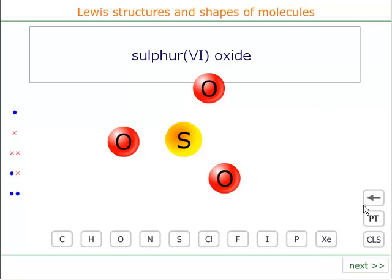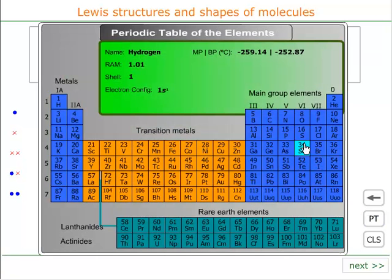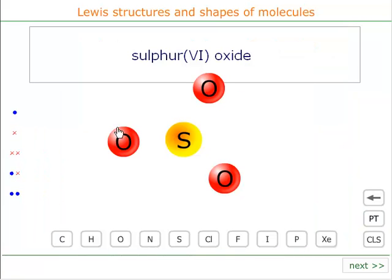Now sulfur, as a main group element, is in group 6 of the periodic table. That means it's got 6 outer electrons. Let's put 6 outer electrons there and we'll use maybe one to share with the oxygen over here, and one to share with an oxygen here, and one to share with an oxygen here.